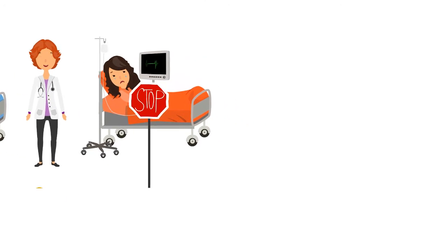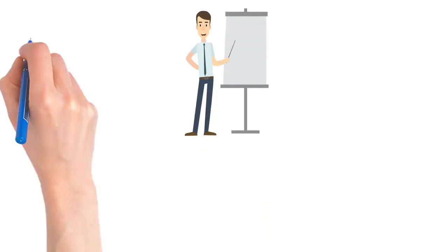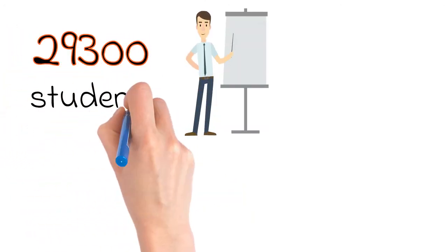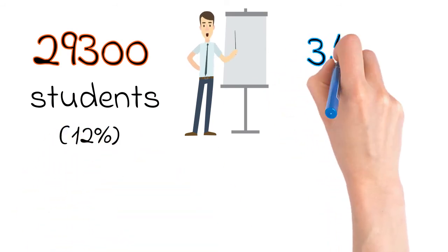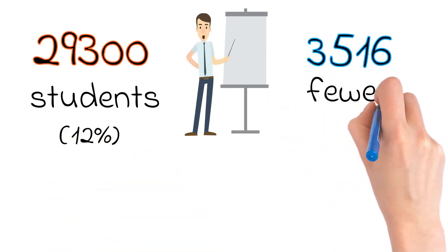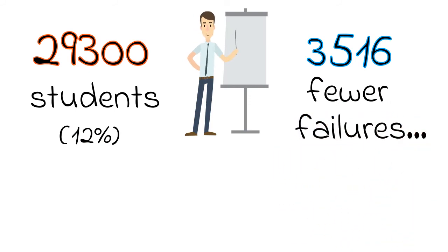Or, to think about it in another way, consider that there were a total of 29,300 students in the lecturing control groups. According to the difference in failure rates, 3,516 fewer students would have failed if they had been taught with active learning strategies.